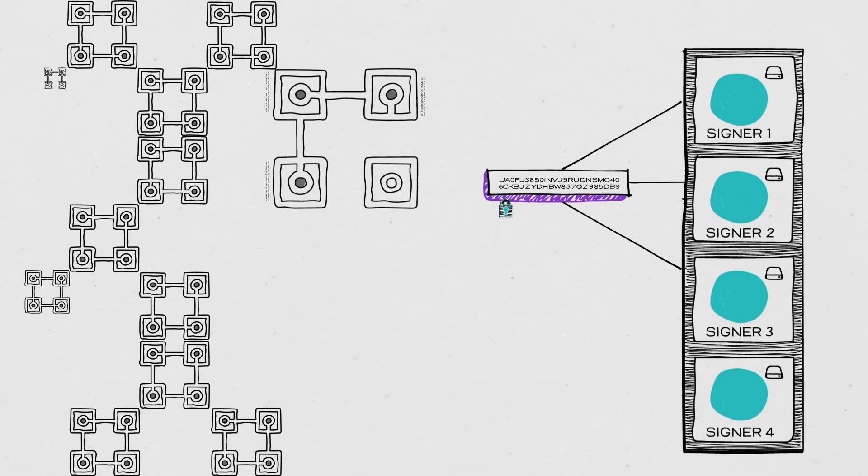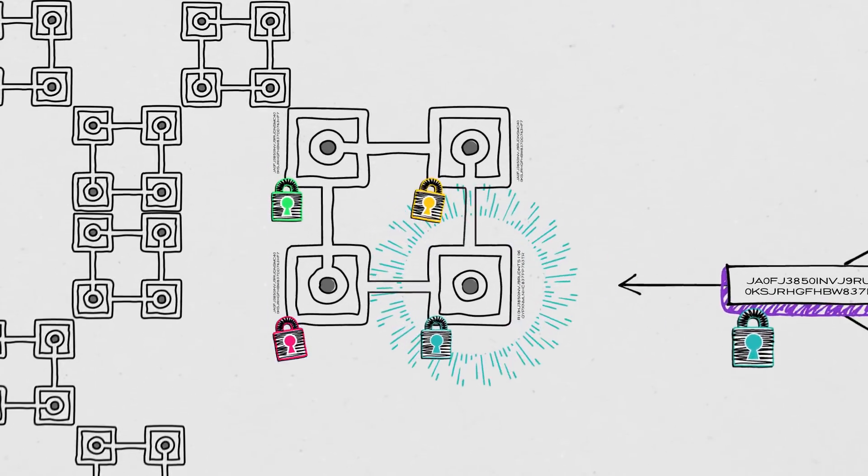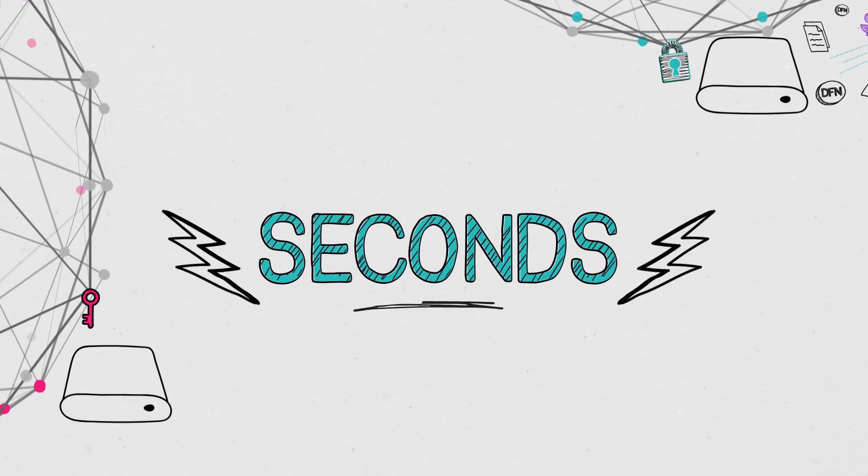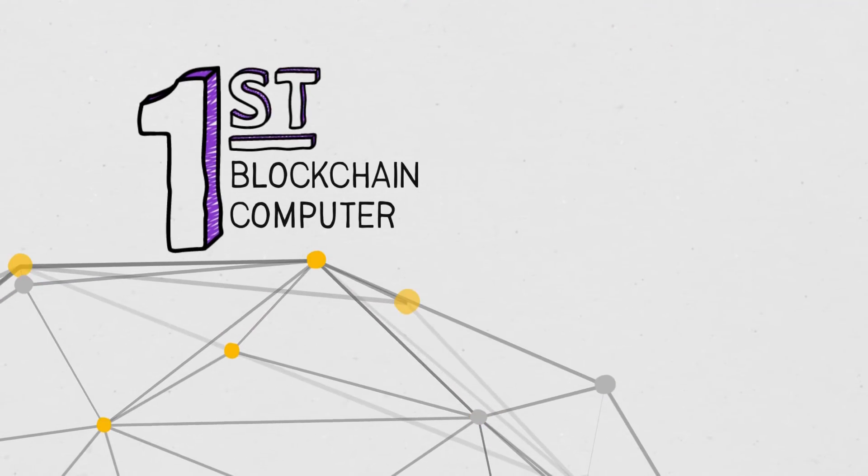Network nodes don't just create blocks and then wait for them to be validated. They also notarize every block in a decentralized manner. Computations are finalized in seconds instead of minutes or hours. Making DFINITY the first blockchain computer fast enough to truly compute.